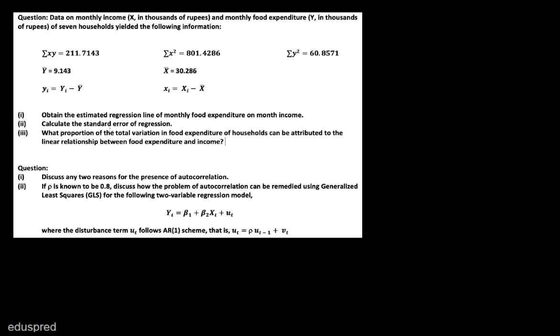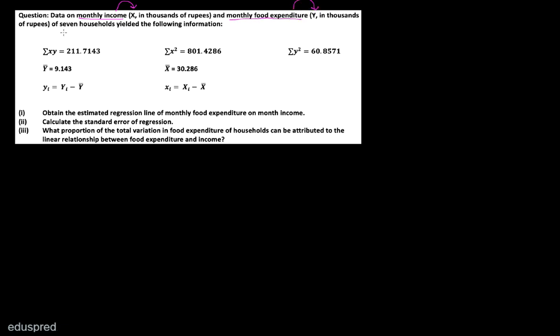In this video, I am going to solve these two questions. Let's start with the first one. We are given data on monthly income, which we are denoting by X, and monthly food expenditure, which we are denoting by Y, of 7 households. That means the sample size is equal to 7.